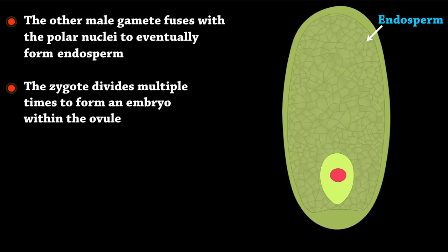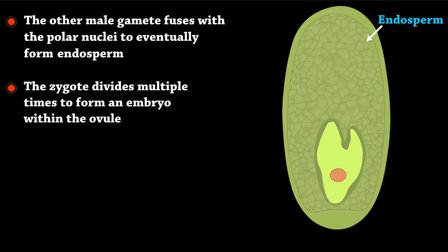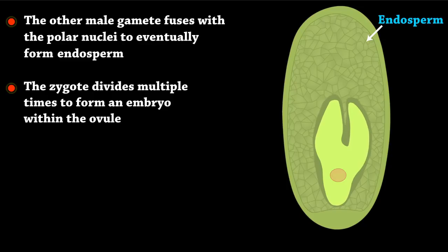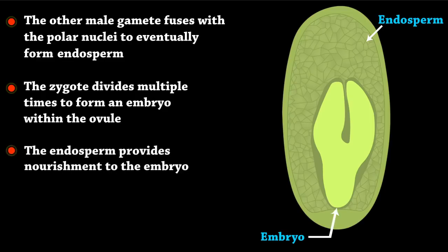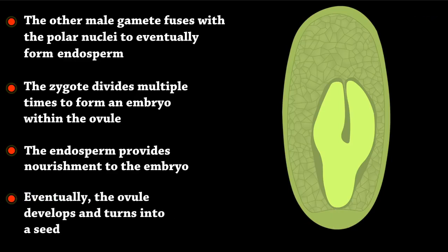The zygote divides multiple times to form an embryo within the ovule. The endosperm provides nourishment to the embryo. Eventually, the ovule develops and turns into a seed.